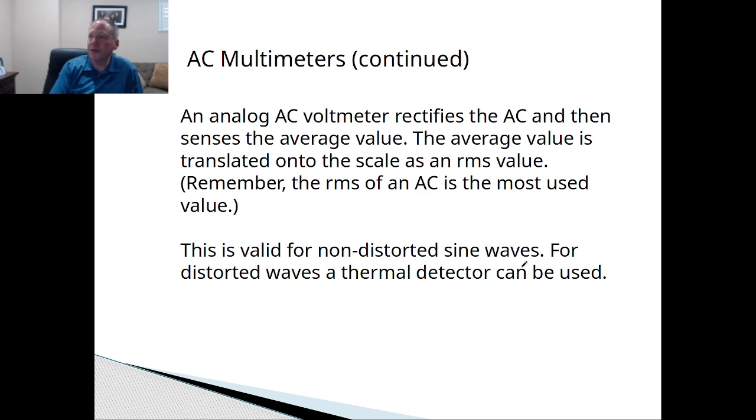Now the AC voltmeter is going to use the rectifier. So it rectifies the AC and then senses the average value. So it basically converts it to RMS. Now remember RMS of an AC is the most used value. So like in our homework and on the test, if you just put voltage equals 10 volts and you don't put what it is here, the assumption is if nothing is written underneath it, it's assumed that it's RMS. If you want to say it's peak, then put a P there. If it's average, put average behind it.